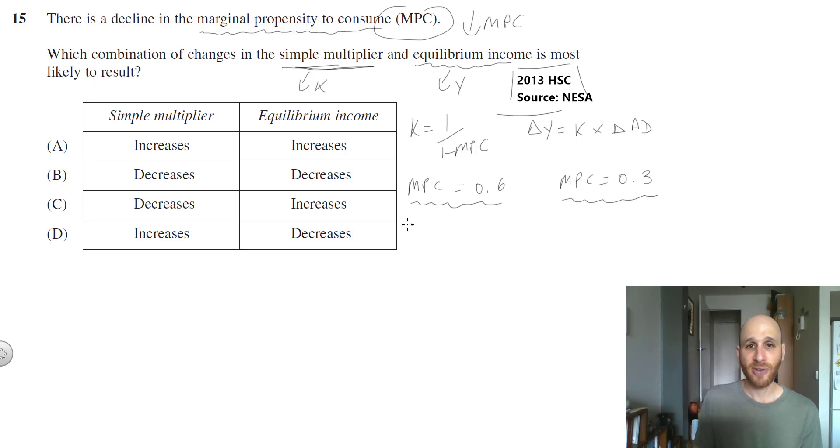If MPC equals 0.6, then K is going to equal 1 over 1 minus 0.6, which is going to equal 1 over 0.4, which will equal 2.5.